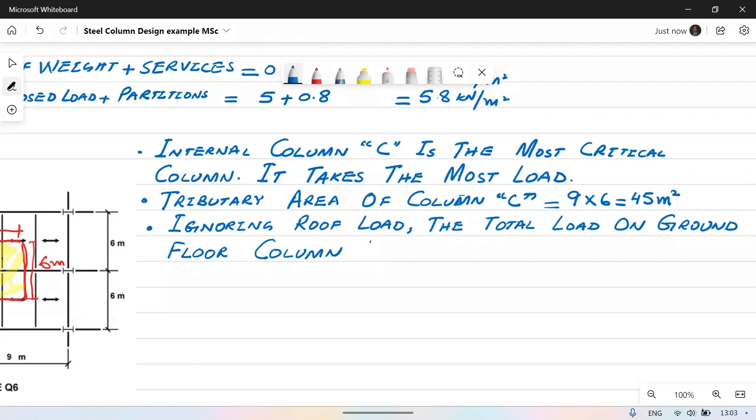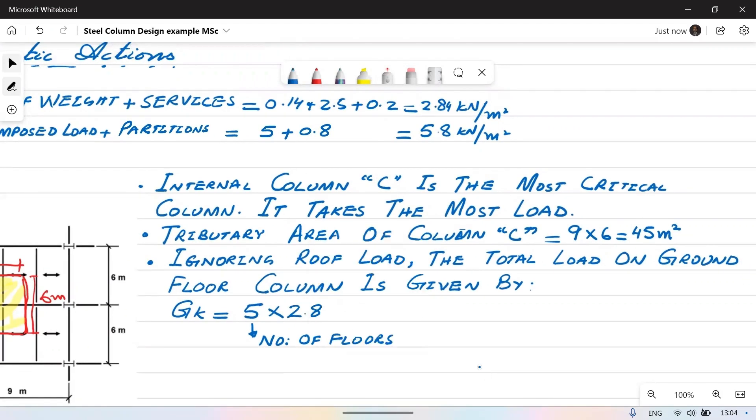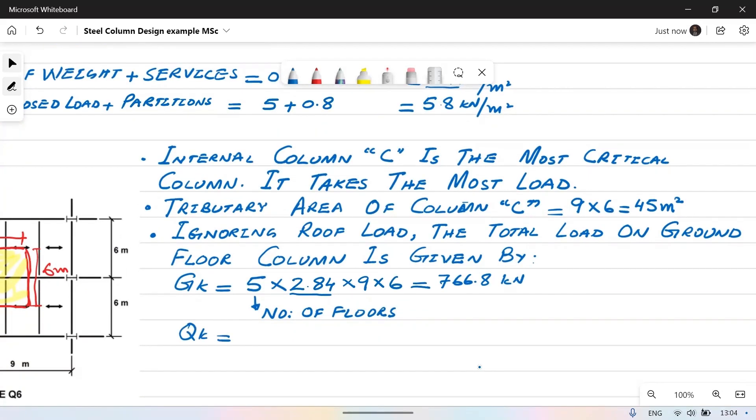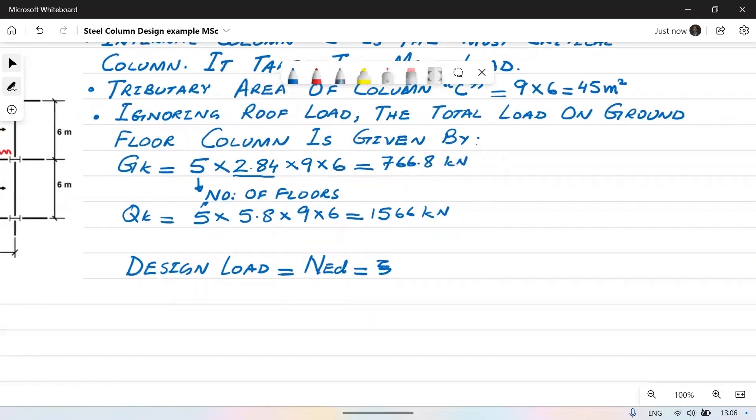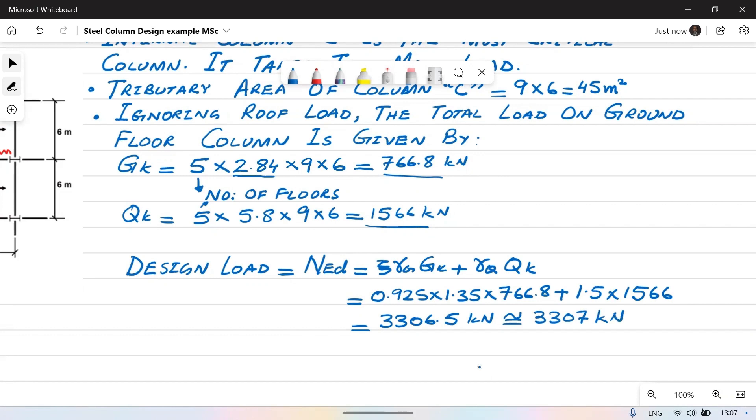Total floor load on ground floor column comes out to be g_k which is permanent load. We will multiply number of floors with floor load in kilonewtons per meter square with tributary area that the column is supporting. In that way we will work out permanent load and variable load. Design load N_ED is equal to psi times gamma_g times g_k plus gamma_q times q_k. This is equation 6.10b. Psi factor is 0.925 times 1.35 times g_k is permanent load which is 766.8 kilonewtons plus 1.5 times variable load q_k which is 1566 kilonewtons. This gives us value of 3306.5 kilonewtons.